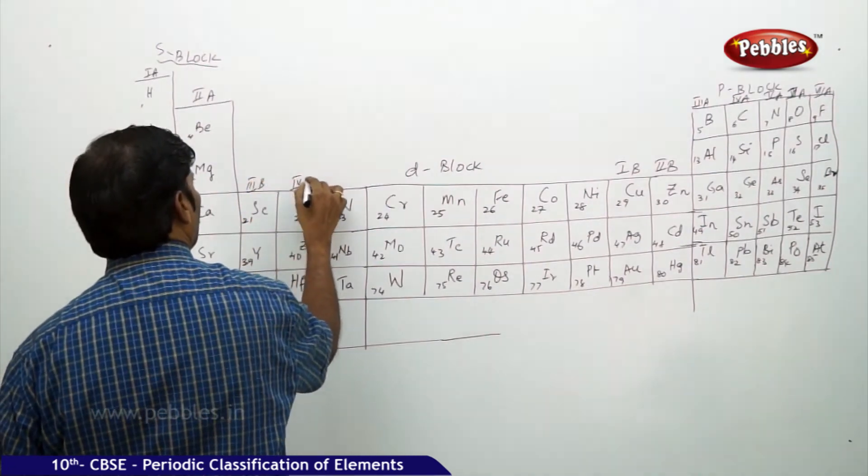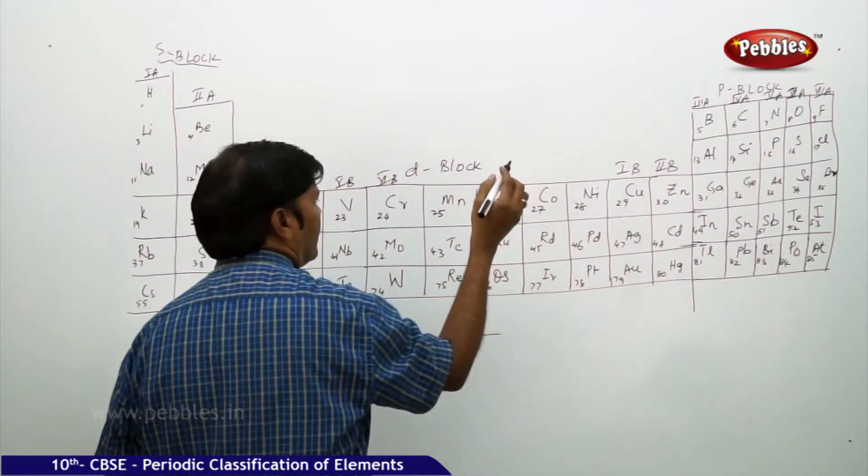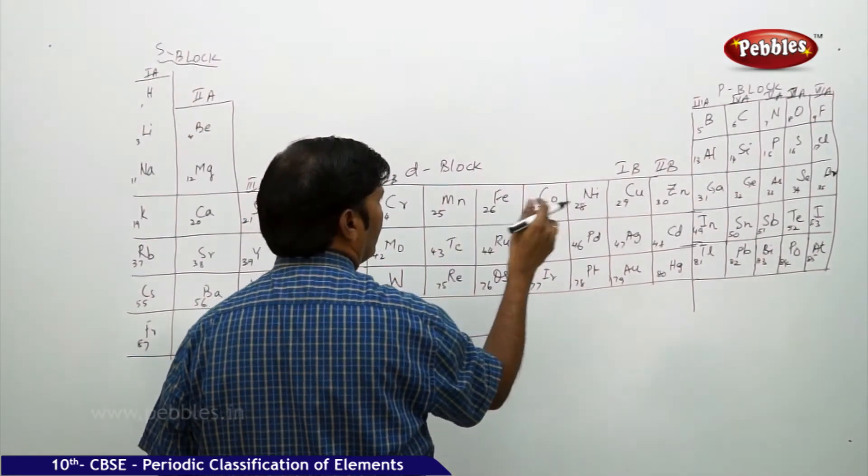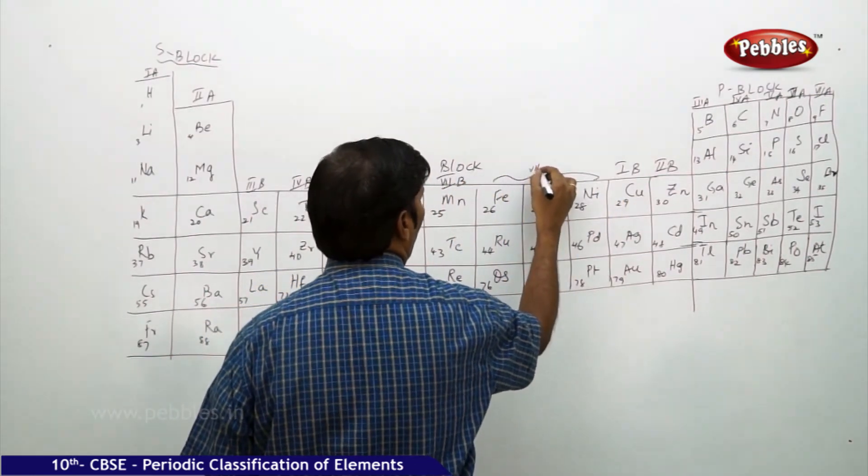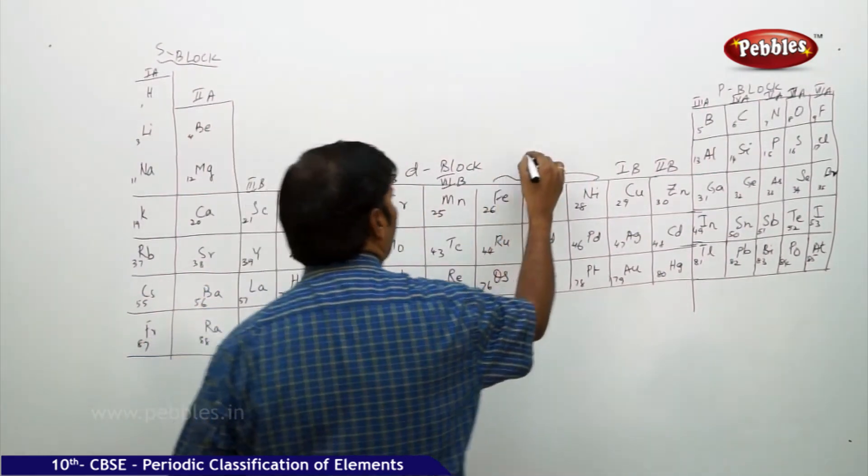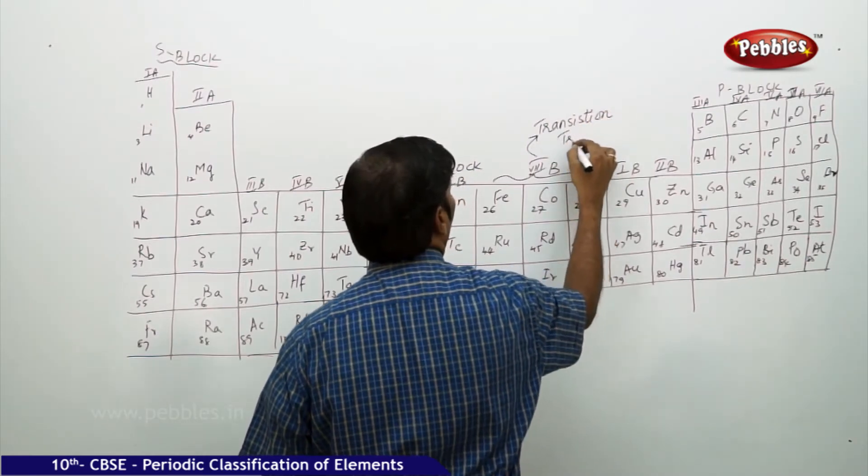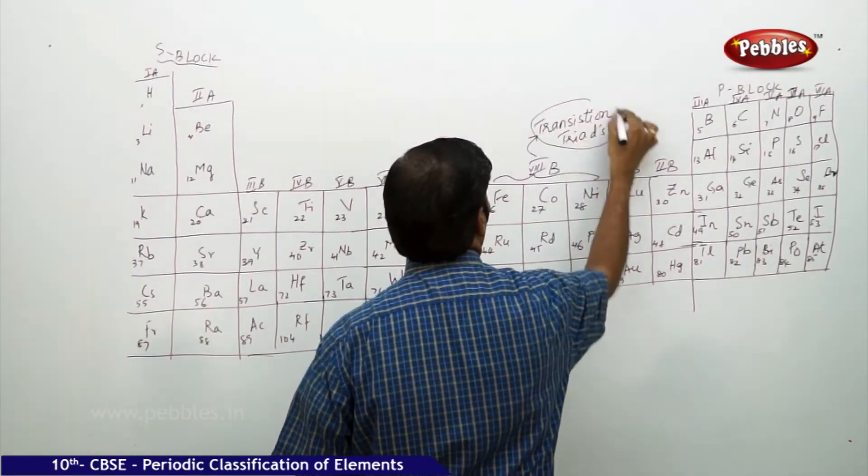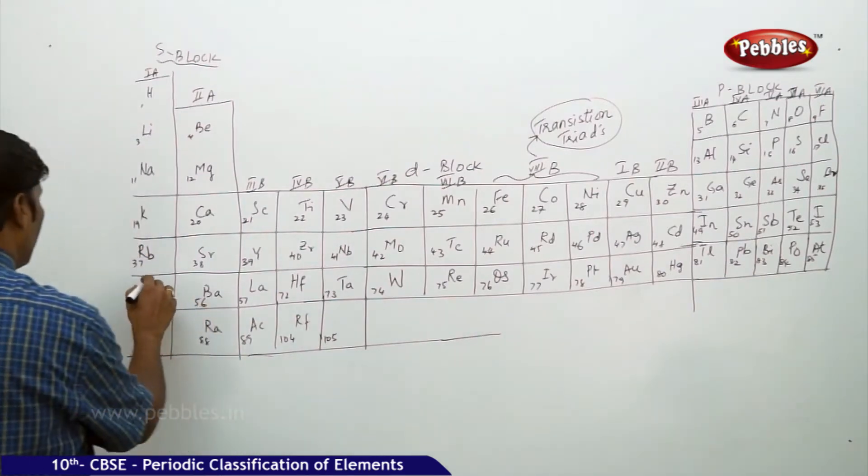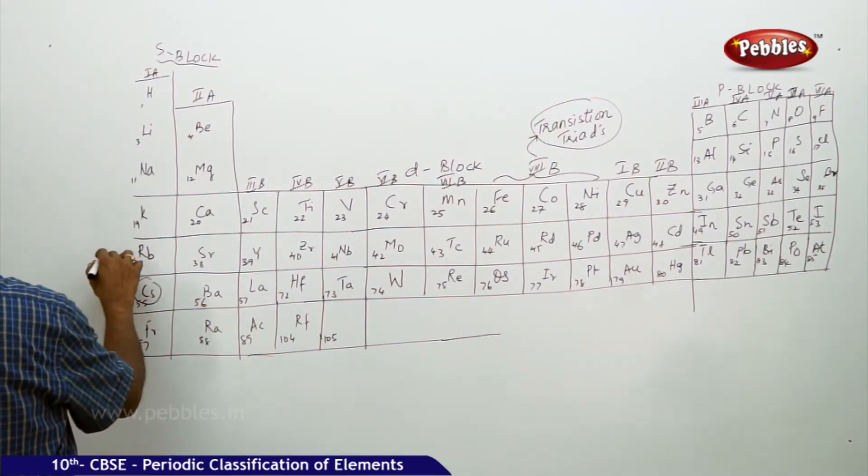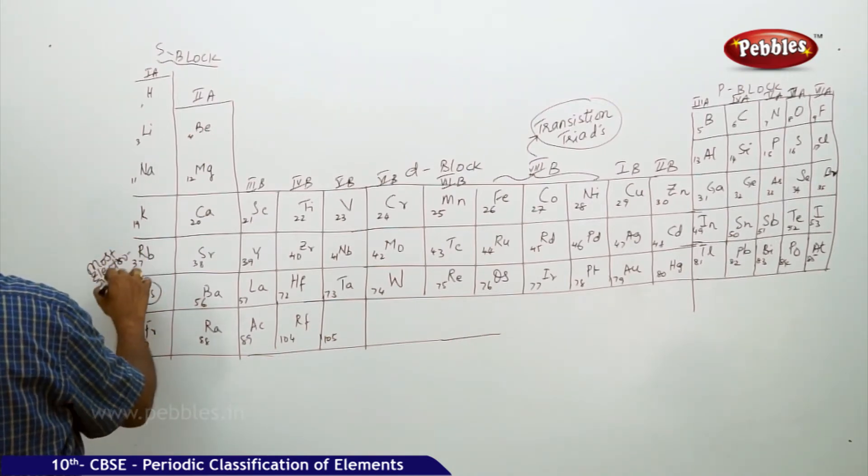This is 3A group boron family, 4A group carbon family, 5A group nitrogen family, 6A group oxygen family, 7A group halogens. This is 1B, 2B, 3B, 4B, 5B, 6B, and 7B. This together is 8B. I call this as transition triads.